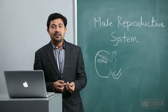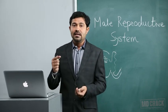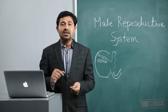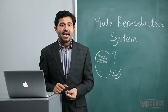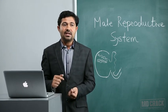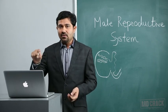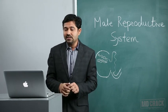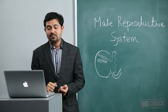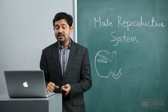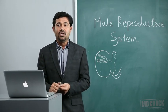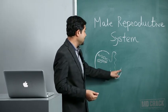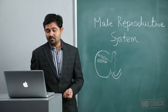The vas deferens enters the inguinal canal, then passes into the abdominal cavity, and through the abdominal cavity it goes into the prostatic part of the urethra along with the ejaculatory duct. It forms the ejaculatory duct and ultimately joins with the urethra, so sperms can be ejaculated out through the urethra.